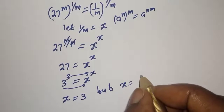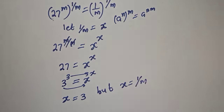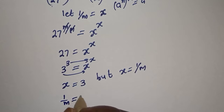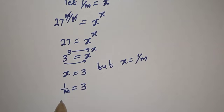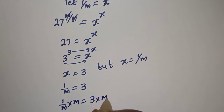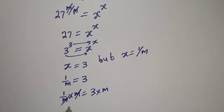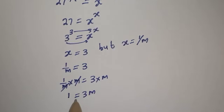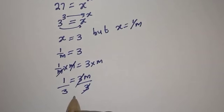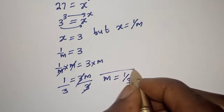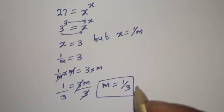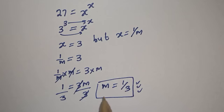Since s equals 1 over m, then 1 over m equals 3. Multiplying both sides by m and dividing by 3, m is equal to 1 over 3. This is the final answer. Before you leave, like, share, comment, and subscribe. Thank you, bye bye.